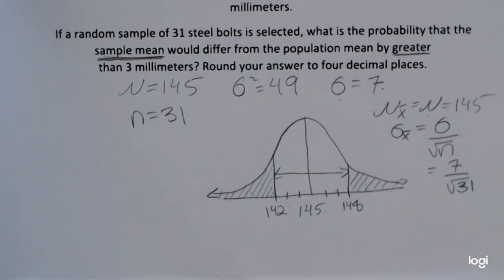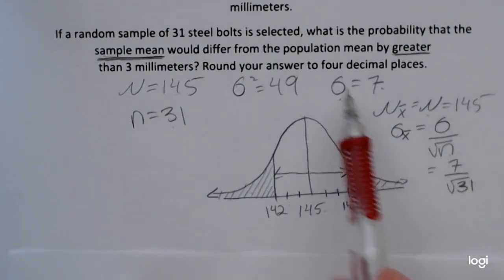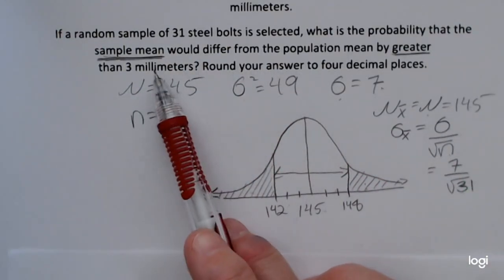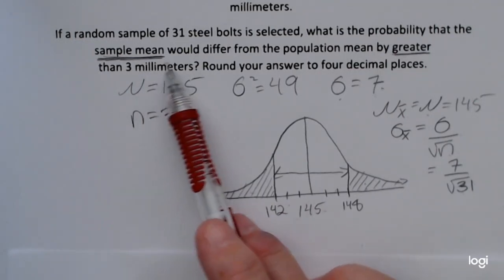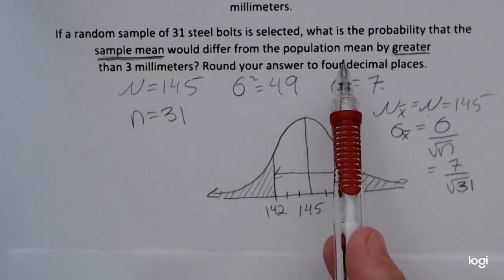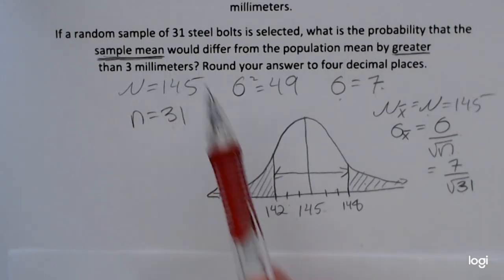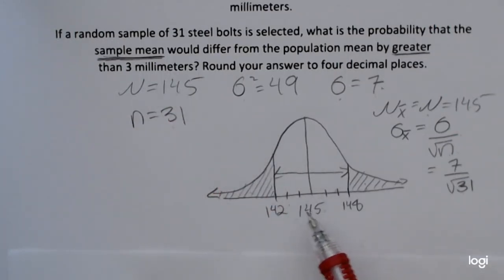They're asking for the probability that X bar would differ from the population mean by greater than 3 millimeters. So if I'm talking about a difference greater than 3 millimeters from the mean, then I'm talking about 3 millimeters above the mean and 3 millimeters below the mean.